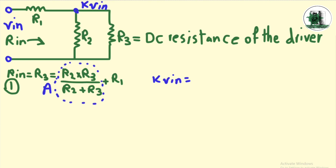The voltage dividing relationship: K times V-in is lower than V-in, because of the voltage dividing of the resistors.